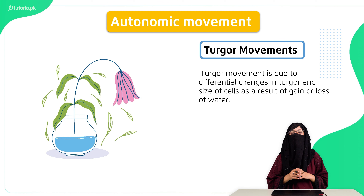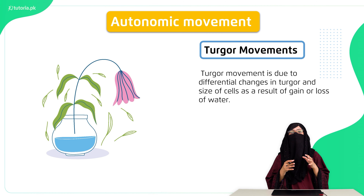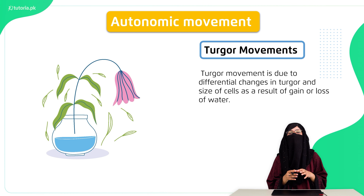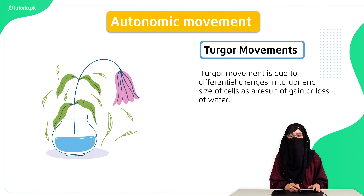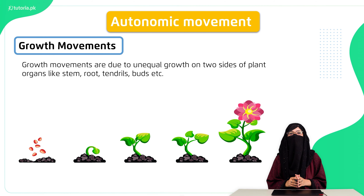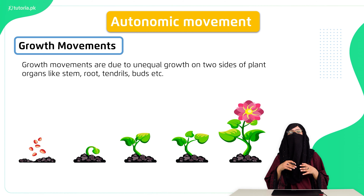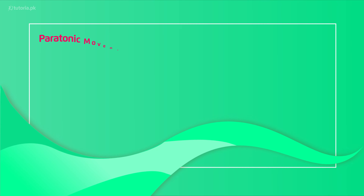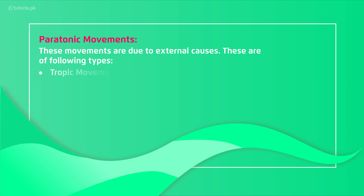The turgor movement is related to changes in water content within the plant. When there is a water deficiency, the plant wilts. The third type is growth movement — when plants grow, roots and shoots move in different directions, so we call this growth movement.